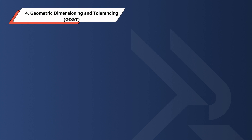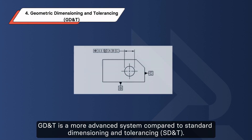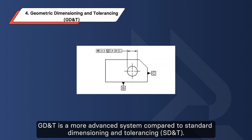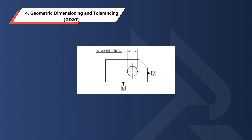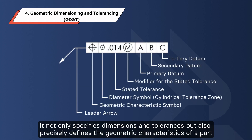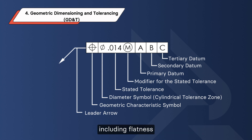Fourth: Geometric Dimensioning and Tolerancing, or GD&T. GD&T is a more advanced system compared to standard dimensioning and tolerancing. It not only specifies dimensions and tolerances, but also precisely defines the geometric characteristics of a part, including flatness, true position, and concentricity.